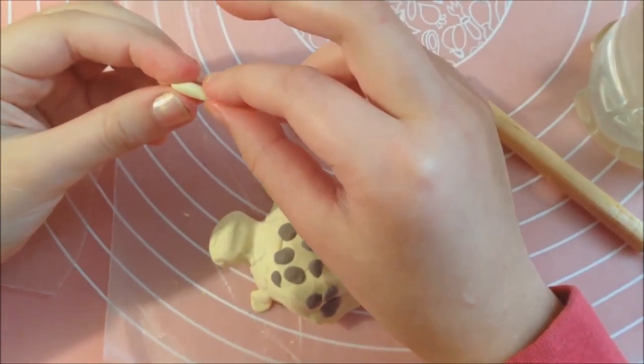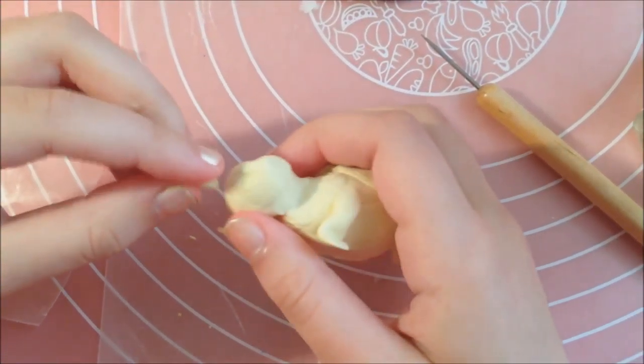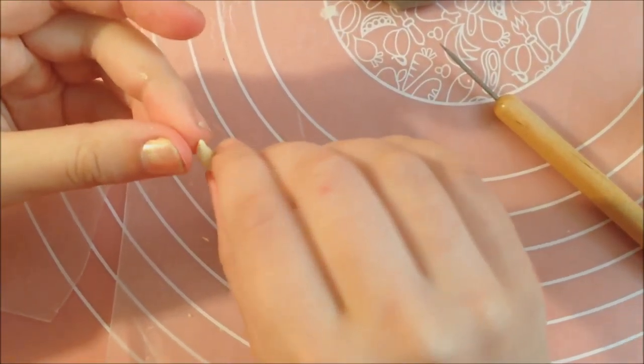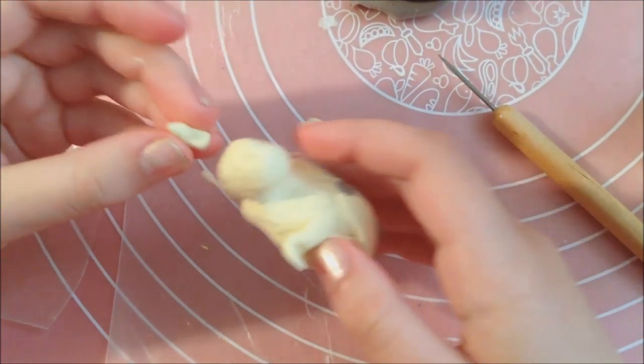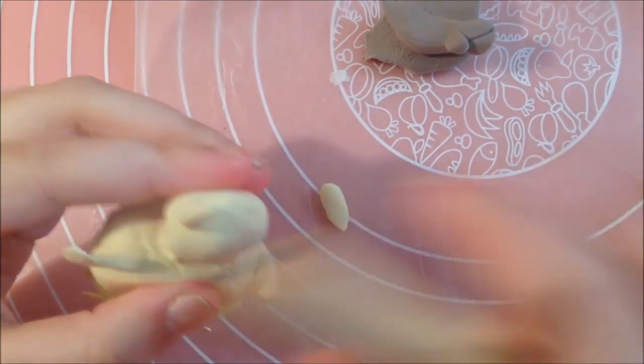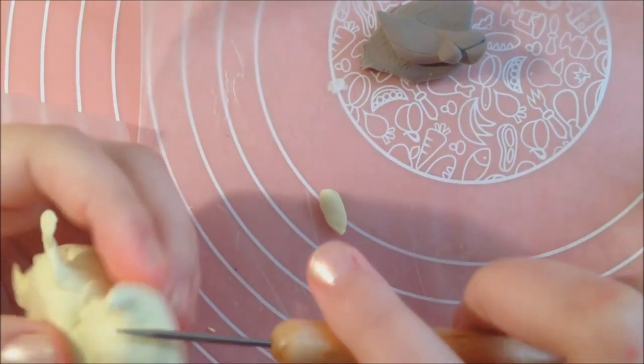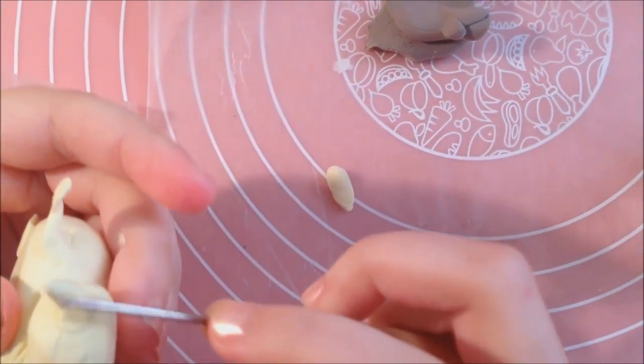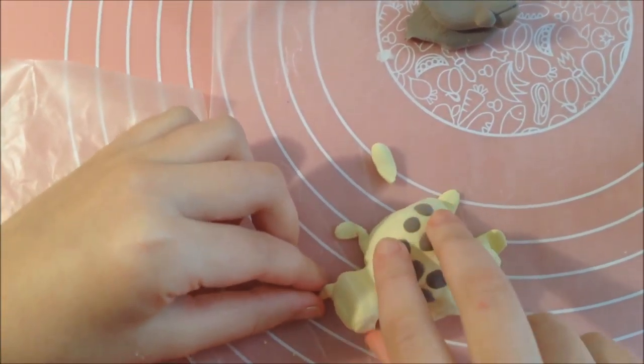So for the antennae, what you want to do is you want to pinch some long clay. And you want to also slightly bend it like this. And to help you stabilize this a bit, you can use your hand, your finger. And if you want, you can also adjust this.